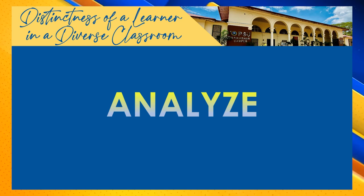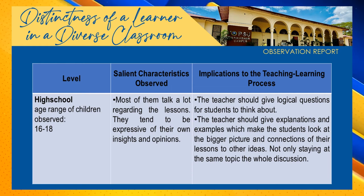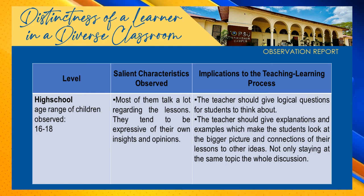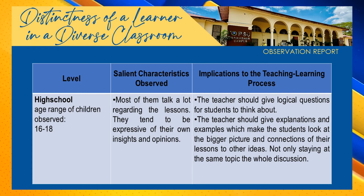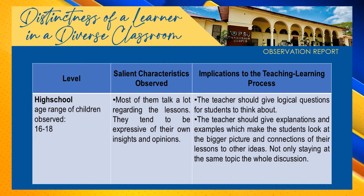And now let's move on to analysis. Our group observed high school students with age ranging from 16 to 18 years old. Here are the salient characteristics we observed: most of the students talk a lot regarding the lessons and tend to be expressive of their own insights and opinions. The implications for the teaching and learning process are that the teacher should give logical questions for students to think about, and should give explanations and examples which make the students look at the bigger picture and connections of their lessons to other ideas.